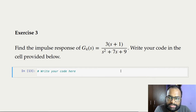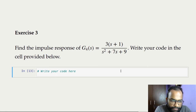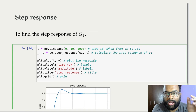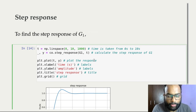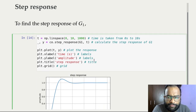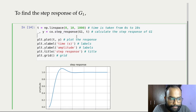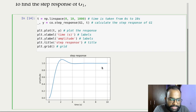Here is another exercise: given a simple system, calculate the impulse response. Now let's calculate the step response of the same system. The code is nearly identical — the only change is replacing the impulse response function with the step response function, keeping everything else the same. The result is the step response up to 10 seconds.